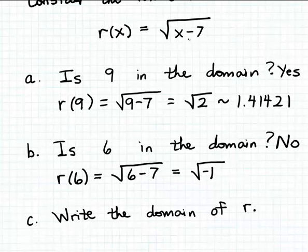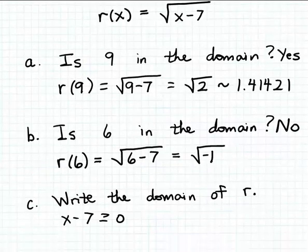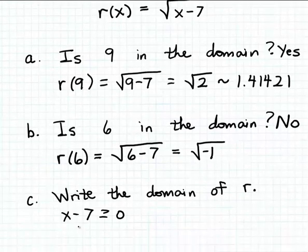So we can probably determine what that domain is just by observation, but we can also do it methodically by solving an inequality. We just want x minus 7 to be greater than or equal to 0. We want that to turn out to be a non-negative value when we substitute a number for x. So we just have to solve this inequality: x minus 7 greater than or equal to 0.